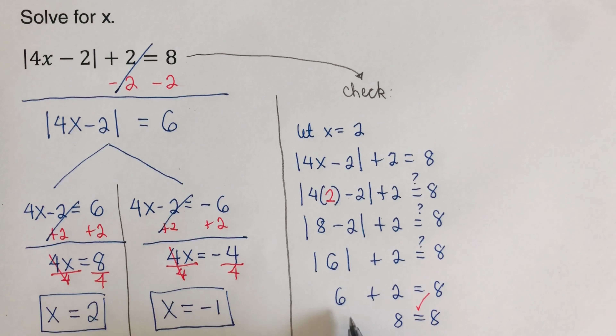Let's go over the next example. Step one: isolate the absolute value expression. This absolute value is not by itself — we have a 3 multiplied and a -1 added outside. First, add 1 to both sides. Then divide both sides by 3. We cross this out and are left with |2x - 4| = 2. The absolute value is now isolated.